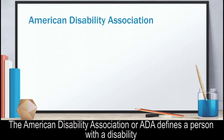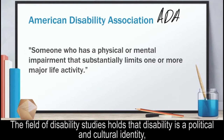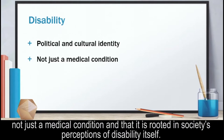The American Disability Association, or ADA, defines a person with a disability as someone who has a physical or mental impairment that substantially limits one or more major life activity. The field of disability studies holds that disability is a political and cultural identity, not just a medical condition, and that it is rooted in society's perceptions of disability itself.